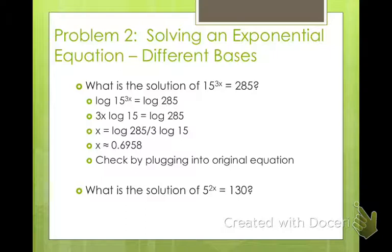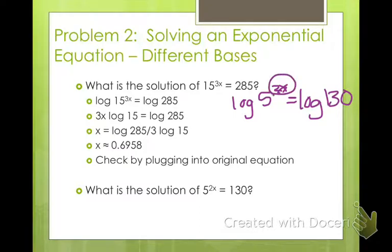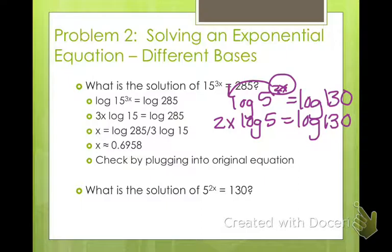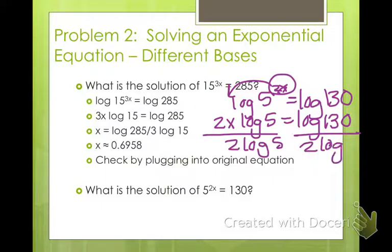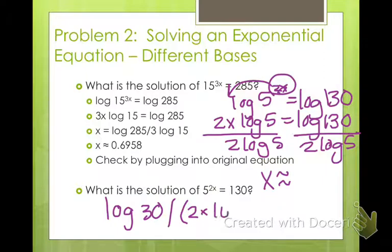So what is the solution of 5 to the 2x equals 130? Okay, I'm going to help you get started on this, but then you're going to have to solve it on your own. So the first thing we do is we take and we write both sides as a log. So log 5 to the 2x equals log 130. Now we use our properties of logarithms. Bring the 2x out front. 2x log 5 equals log 130. Now, anything that's not an x we want to get rid of. So I'm going to divide both sides by 2 log 5. And then go ahead and plug that into your calculator and get an estimation for x. You're going to have to write it as log 30 divided by parenthesis 2 times log 5 and parenthesis, if you're not sure how to do that.